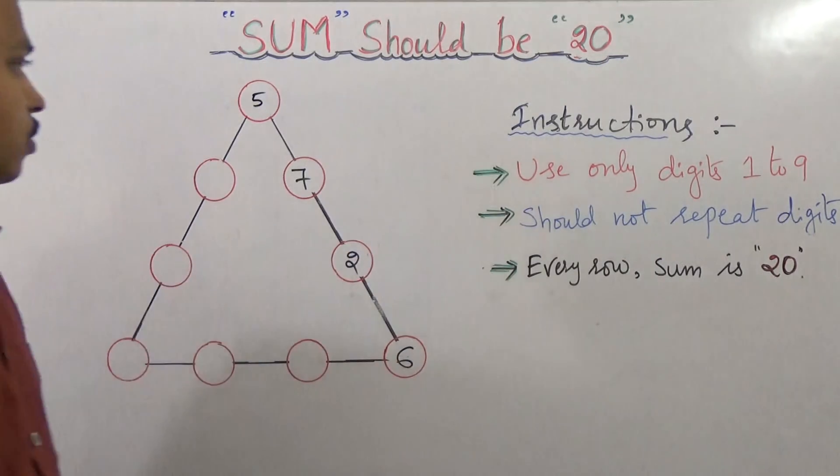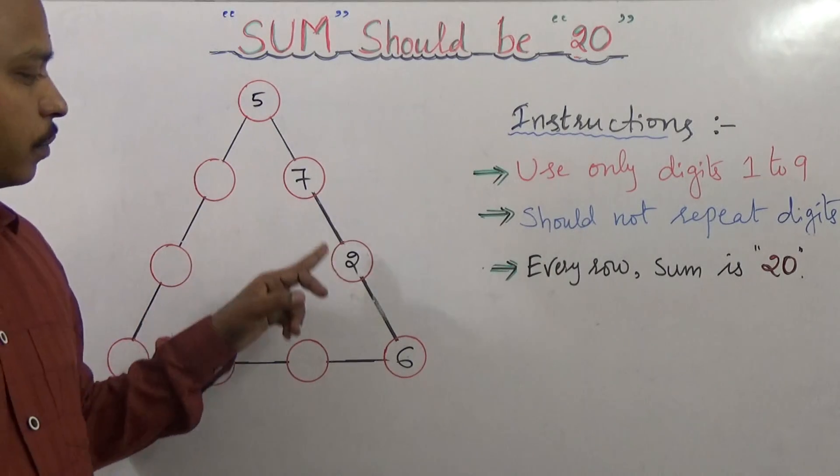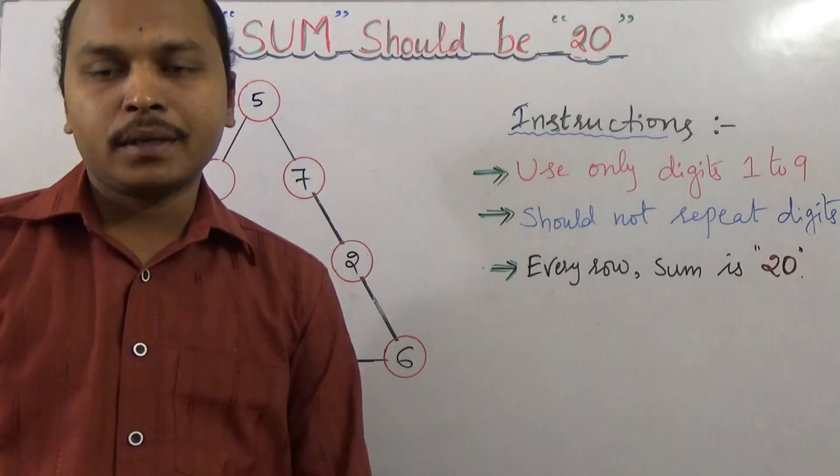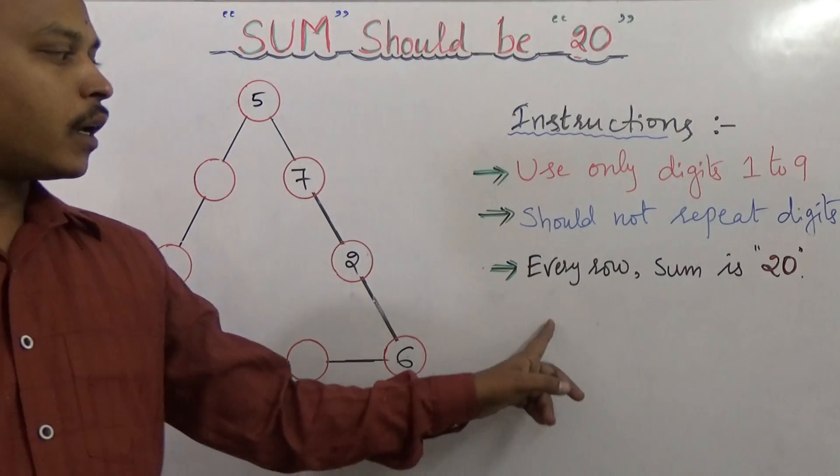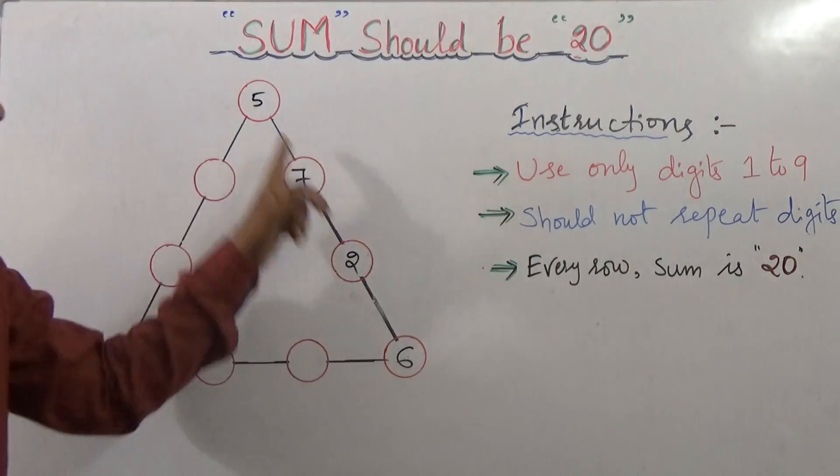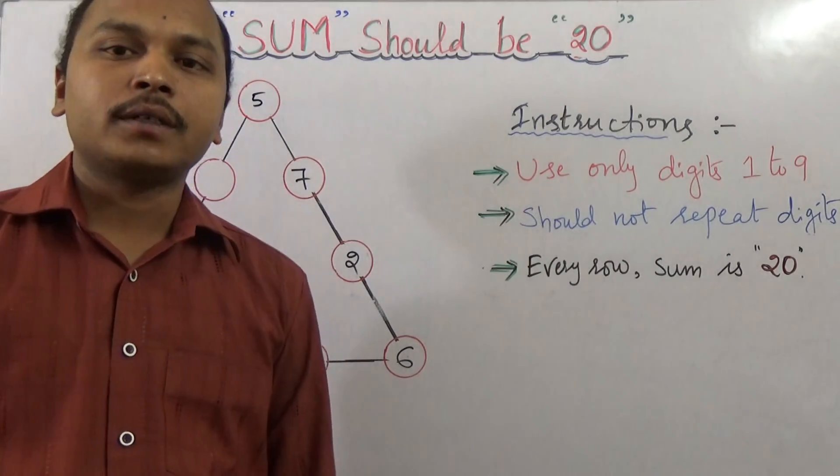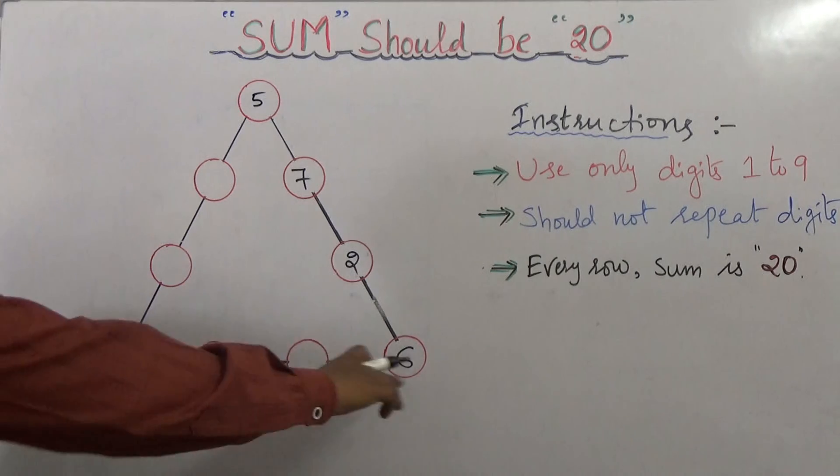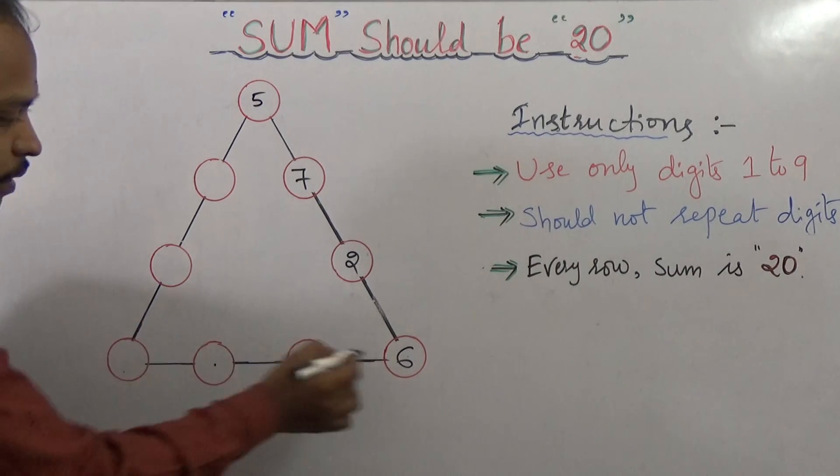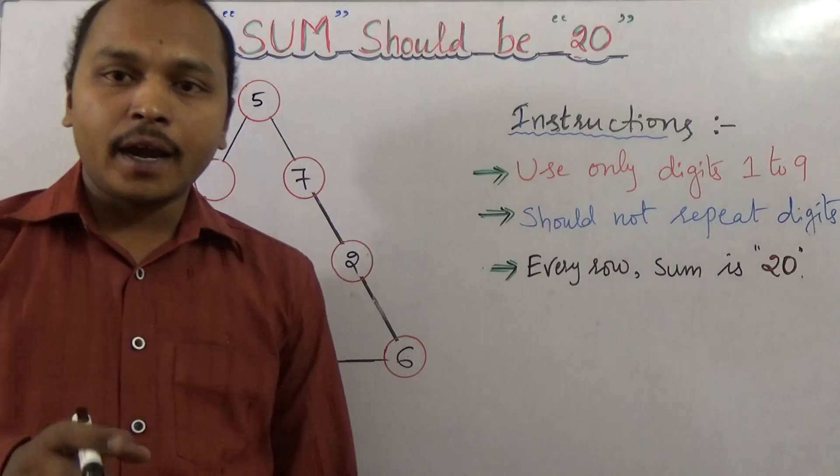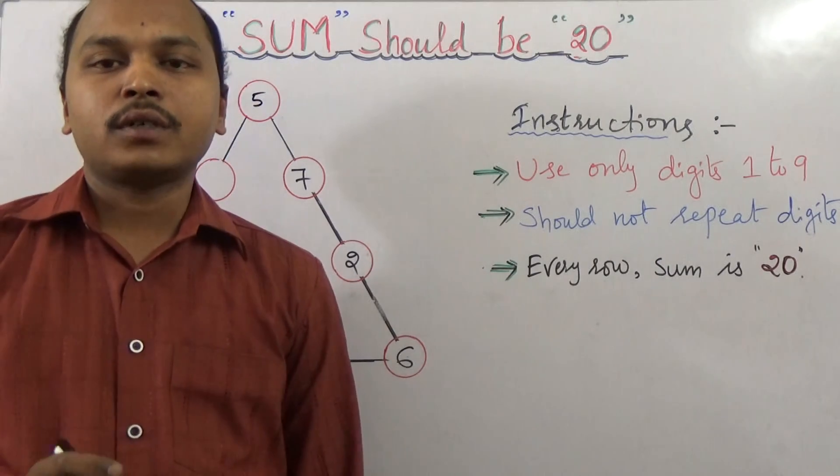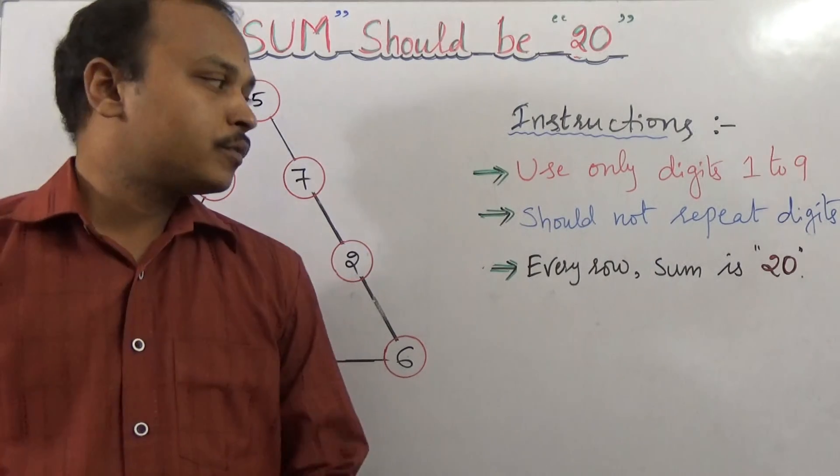Say 6. Okay, 5 plus 7 is 12, 12 plus 2 is 14, and plus 6 is 20. Every row should be 20. Again, these four numbers should not repeat in another place. Similarly, the next row - these three plus along with the 6, if I add also, the complete row sum of the digits in every row should be equal.